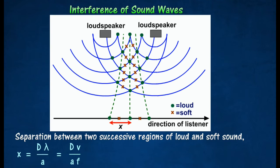The formula of interference is given by X equals D lambda over A, where X is the separation between two successive regions of loud and soft sound.